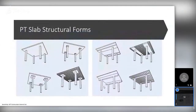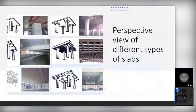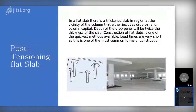In post-tensioning slab design, these are the forms of slabs normally used in the construction industry. The first is the flat slab, which is predominantly used in commercial buildings and IT structures. In the flat slab, drop panels are introduced near the column, and the rest of the areas are normal slab. Flat slab construction is the best method available now in the industry. Cycle time can be reduced a lot by eliminating beams and other components.